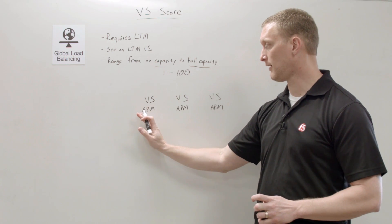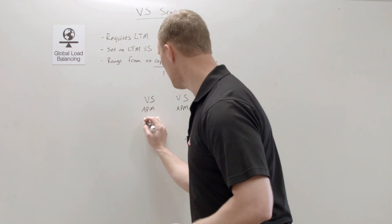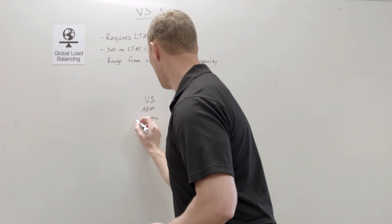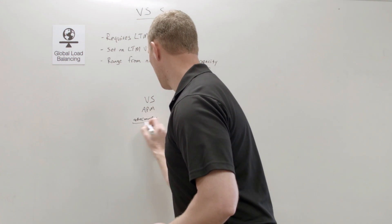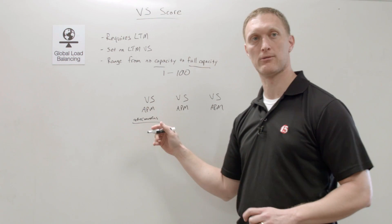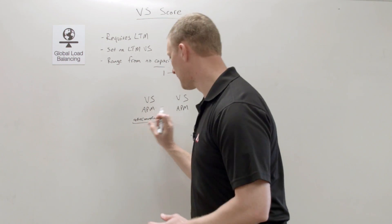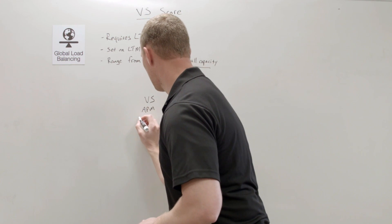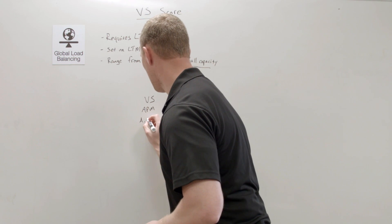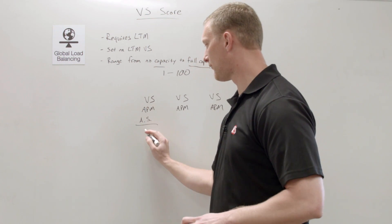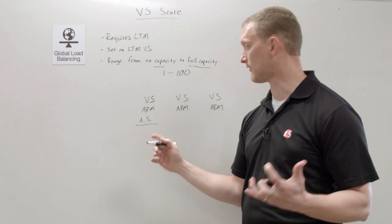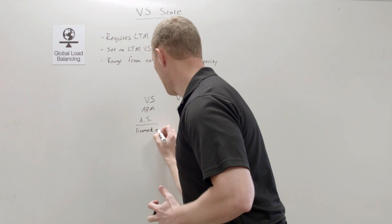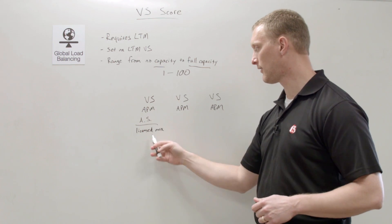The way APM calculates the virtual server score is it uses active sessions divided by the licensed maximum. So the formula is: active sessions ÷ licensed max.